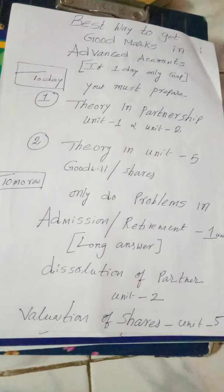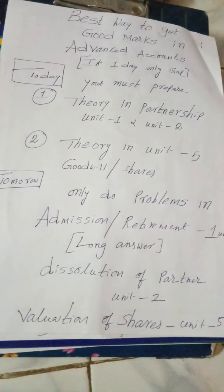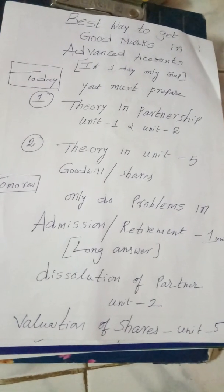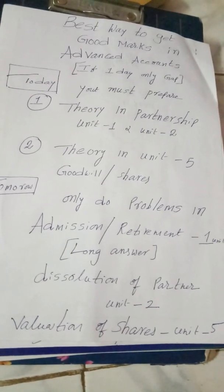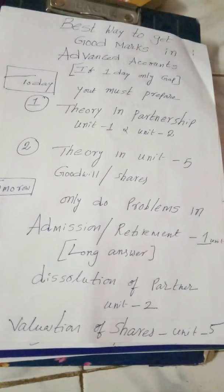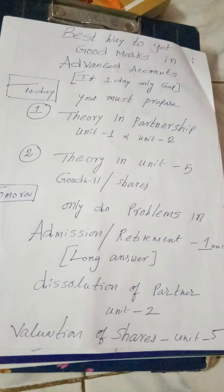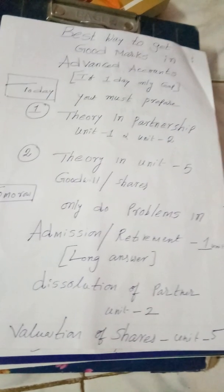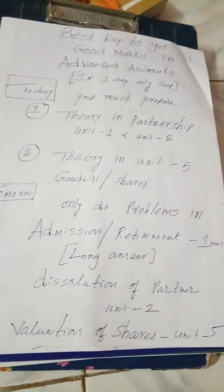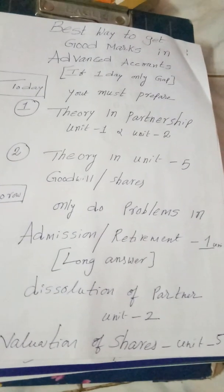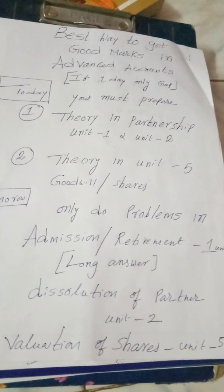Read that rule carefully. Then focus on Unit Number 2 — dissolution. Not only solving the problem, but understand how you are going to do the problem. Give full concentration to Unit Number 1 and Unit Number 2. After that, there is still time — you should also look at Unit Number 5 covering goodwill, shares, and debentures.